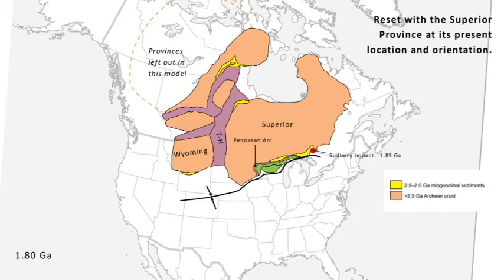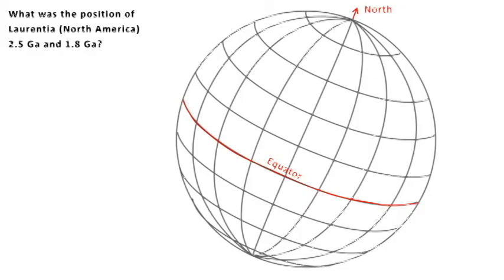There are no island arcs in those zones other than the one I showed earlier, which supports the microcontinent model. We have modern analogs for this: microcontinents exist today in the Indian Ocean, mostly between Madagascar and India, and also between western Australia and India.